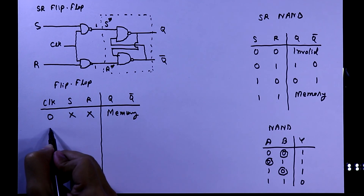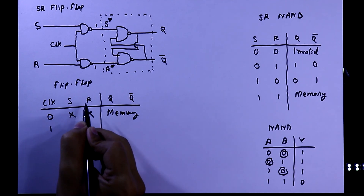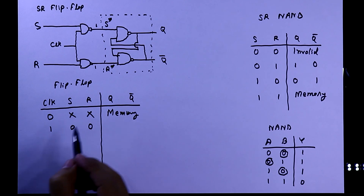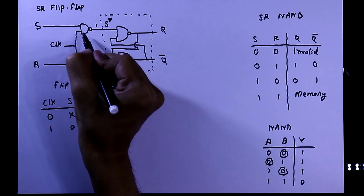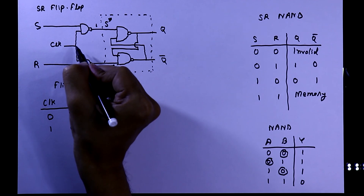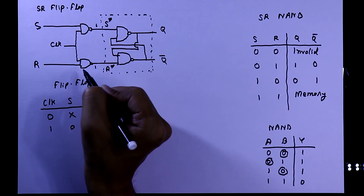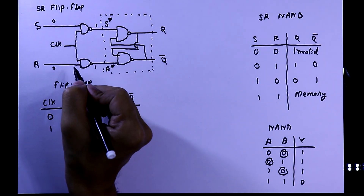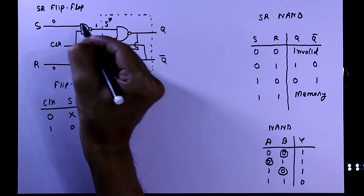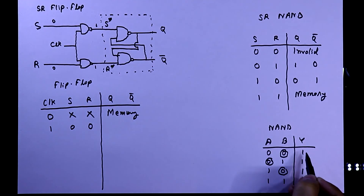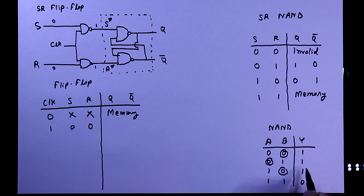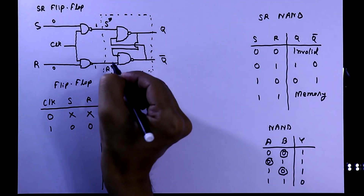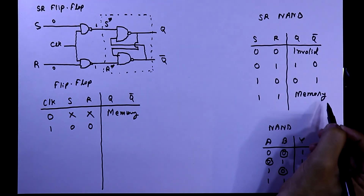Now we will see when clock is one and S and R are zero. As clock is one, one input of the NAND gate is one and the other input is zero, so S and R become zero. If one input of a NAND gate is zero, the output will be one. So we are getting one, one at the SR latch input. If the input of the SR latch is one, one, then it will be in memory state.